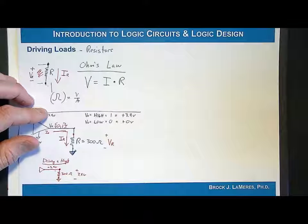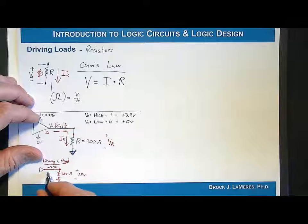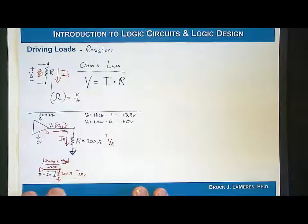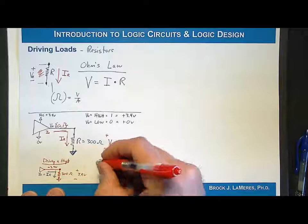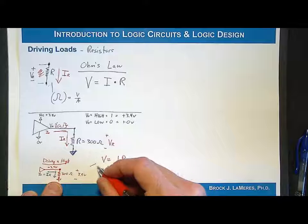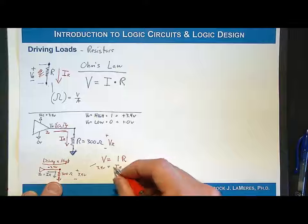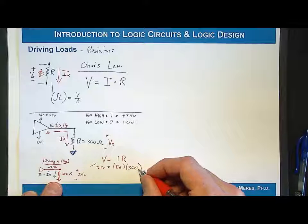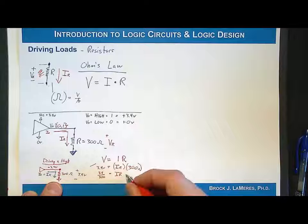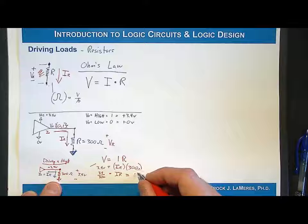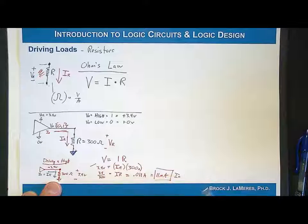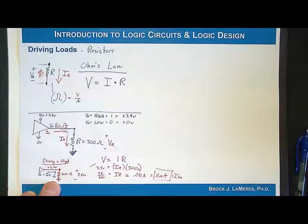The current IR flows down through the resistor, and that equals IO — the load takes whatever it wants. Using Ohm's Law: V = IR, the voltage across the resistor is 3.4 volts, resistance is 300 Ohms. So IR equals 3.4 divided by 300, which equals 0.011 amps, also called 11 milliamps. This is IOH when driving high — we need to make sure we can supply 11 milliamps.